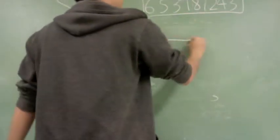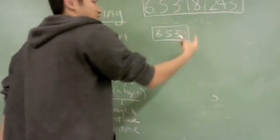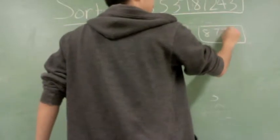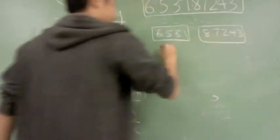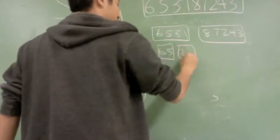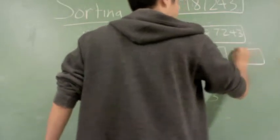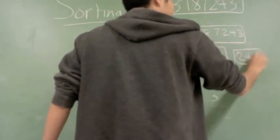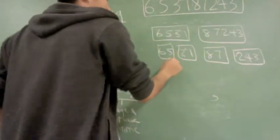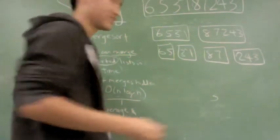So let's get started. You have the first half here: 6, 5, 3a, and 1, keeping this notation for the repeating element. And 8, 7, 2, 4, 3. Divide this in half again: you have 6, 5, 3a, 1, 8, 7, 2, 4, and 3. Remember, we're trying to make the promise that we sort this recursively and maintain this O(n log n) time.